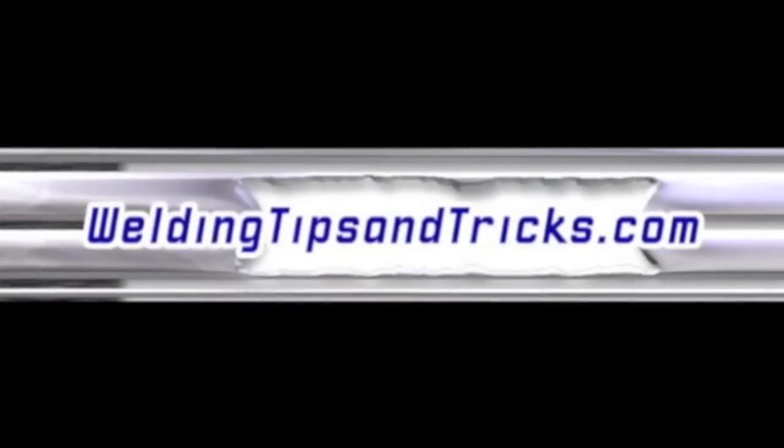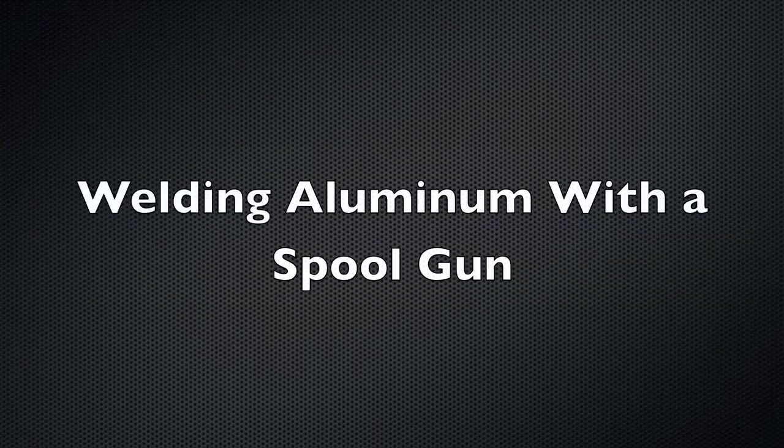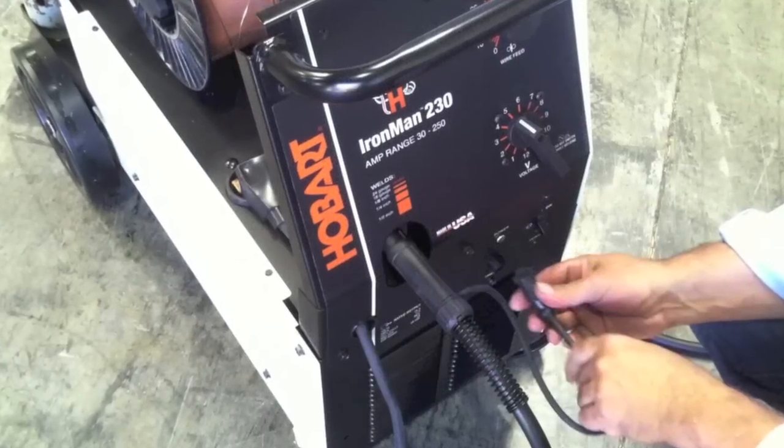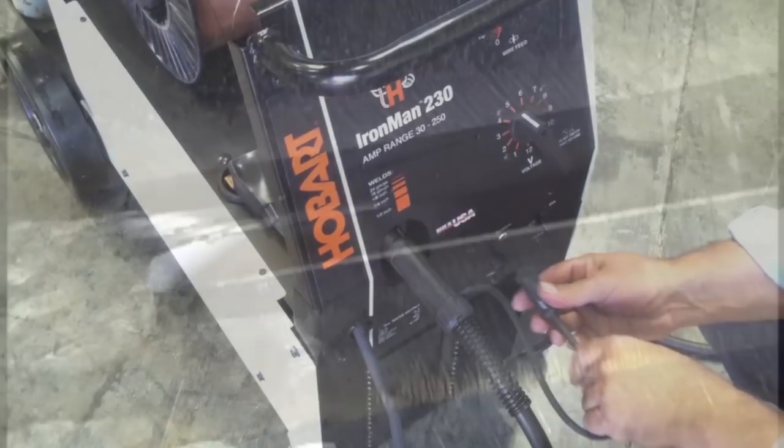Hey, thanks for watching another video from WeldingTipsAndTricks.com. I have a project coming up on some really thick, pretty thick anyway, half-inch and thicker, half-inch and three-quarter aluminum, and I'm going to use this Iron Man 230 with a spool gun for it.